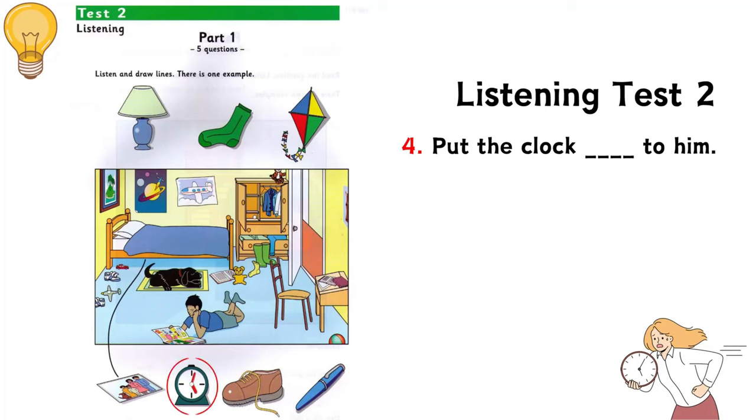Four. Look at the dog. He's sleeping on the mat. Yes. Now put the clock next to him. Put the clock next to the dog. Yes.